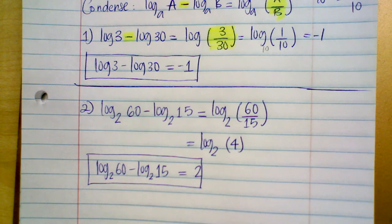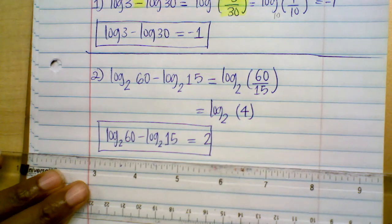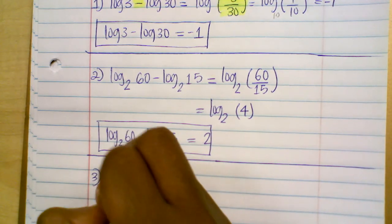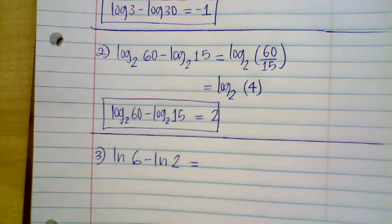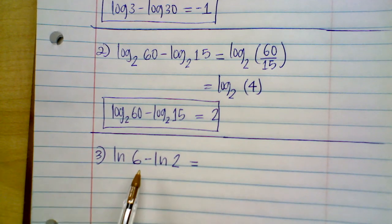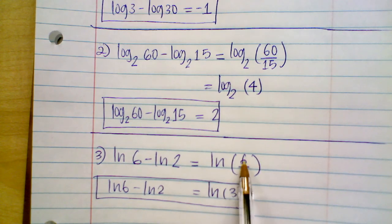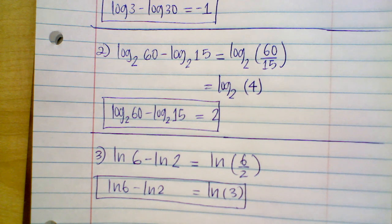For number three, you're given ln of six minus ln of two. How would you condense this log? The answer is ln of three, because six divided by two is three. It was my pleasure teaching you today. I hope this video was beneficial to you. Thank you for being here, and see you in the next video.